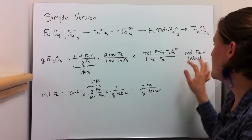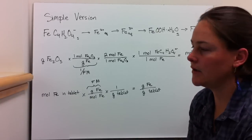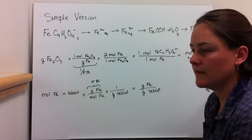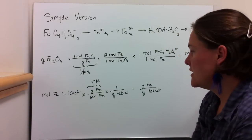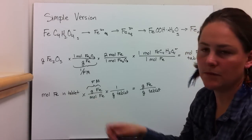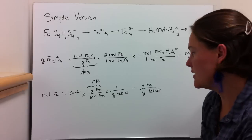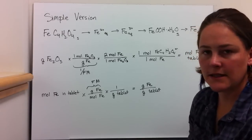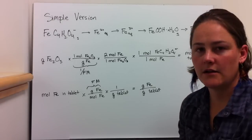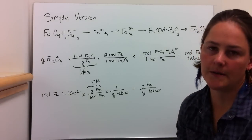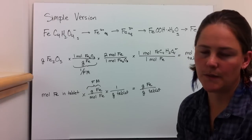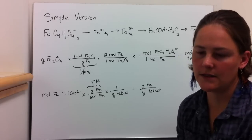You find the moles of iron per tablet — however many tablets you use. If you have moles of iron in the tablet, you multiply by the molecular weight of iron and divide by the mass of the tablet, and you end up with grams of iron per gram of tablet. You can convert that to weight percent, parts per million, parts per billion — any way you want to do it.